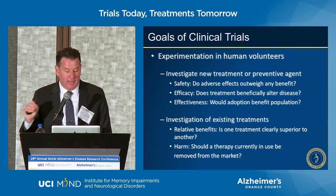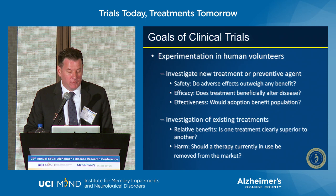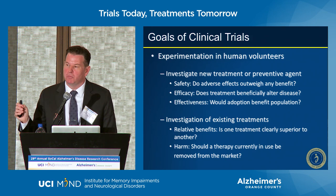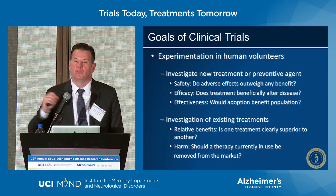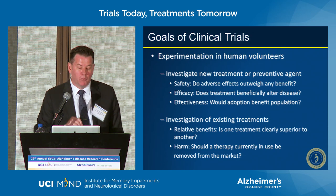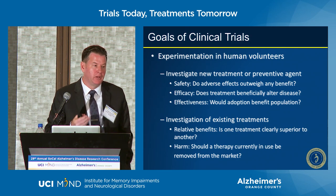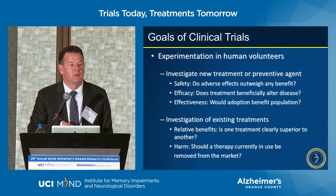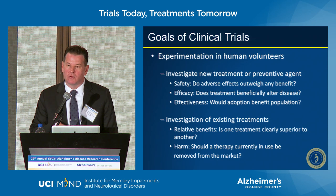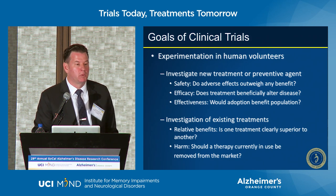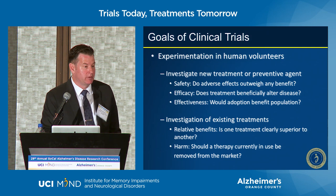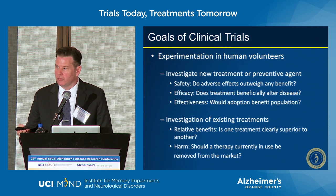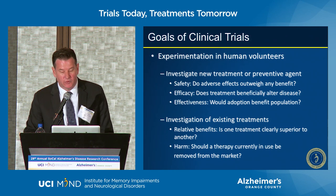When we think about investigating existing therapies, we're talking about relative benefit — whether one treatment is superior to another. We are also looking at harm: should a therapy currently in use be removed from the market? We've had to reinvestigate certain therapies in clinical trial settings because we still have equipoise, meaning we don't really know the answer. We need the controlled trial to determine if there truly is a harmful signal associated with a therapy.